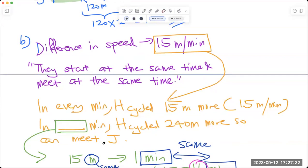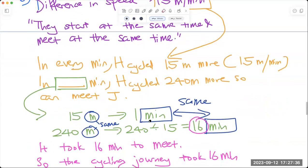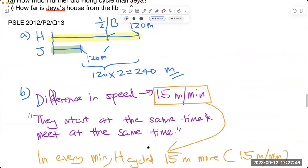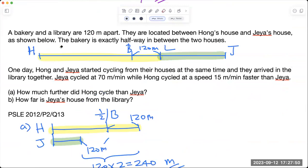So Hong can meet Jaya. This is like a rate question: 15 meters in one minute, 240 meters will be 240 divided by 15, which is 16 minutes. So what this means is from start to end, Hong actually took 16 minutes to finally meet Jaya.